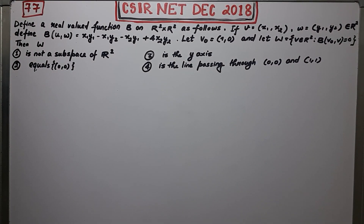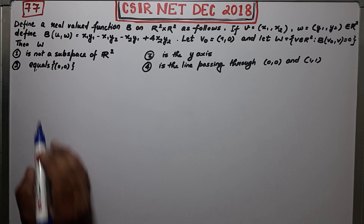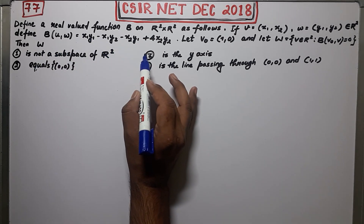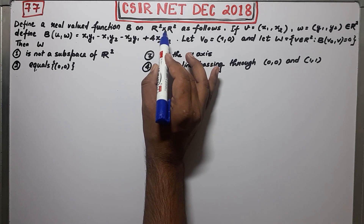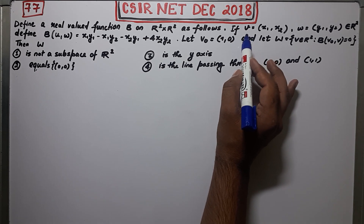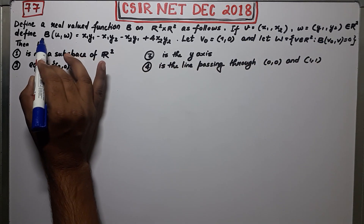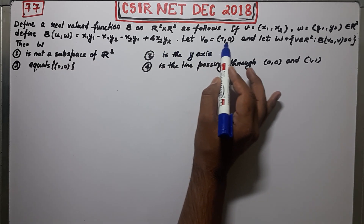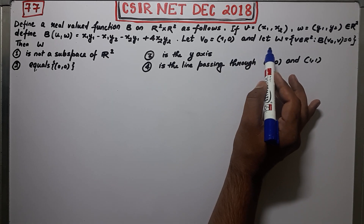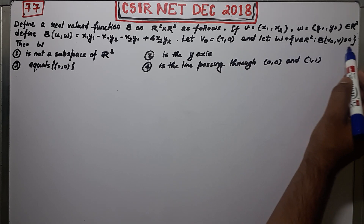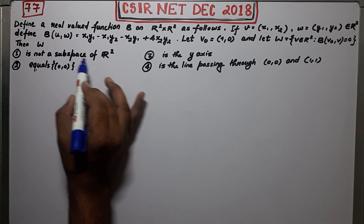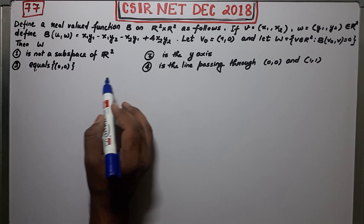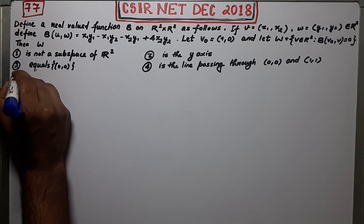Welcome guys. This is question number 77 of NET December 2018 and it's a question of linear algebra. They define a real valued function b on R² cross R² as follows — taking two points from R². Now v₀ is a fixed point (1,0) and W is defined a certain way. They are asking whether W is a subspace or not.